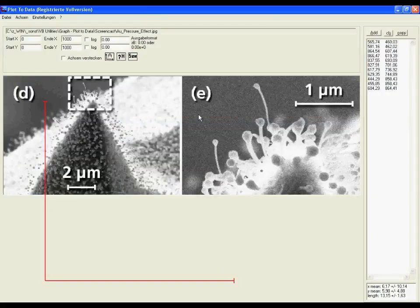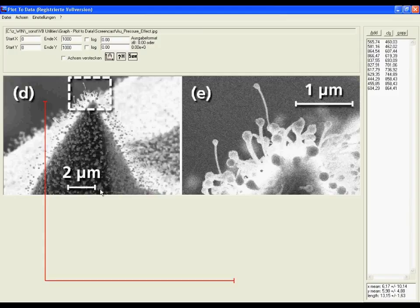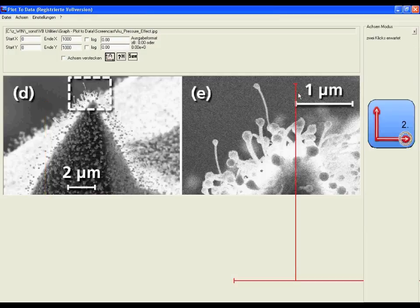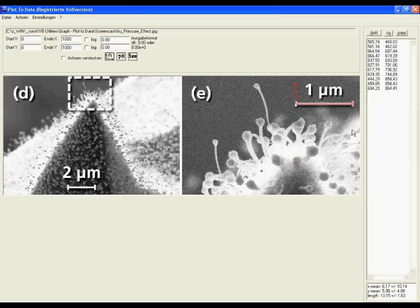Another example what I particularly use the plot to data for are SEM images where you just have the scale and later you want to know how big is something. So again you press A to adjust the axis and you say the start is somewhere here and the end is somewhere here. And then you can with the arrow keys adjust the scale and you just know the x scale and you don't know the y scale.